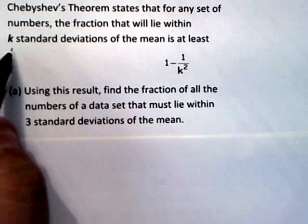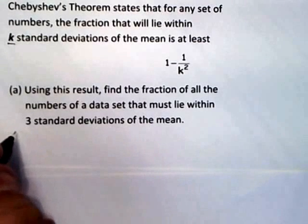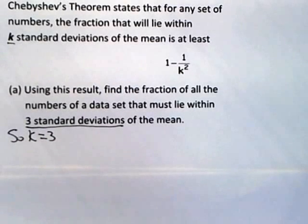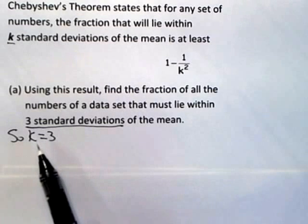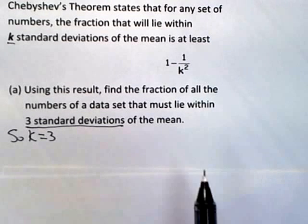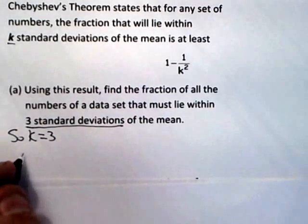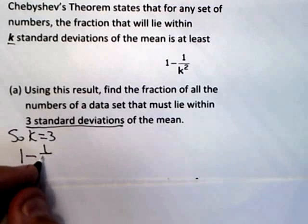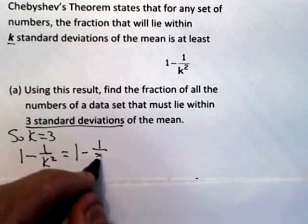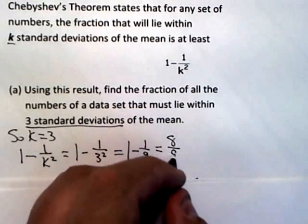In the statement of Chebyshev's theorem, k is the number of standard deviations from the mean. So if we want it to be within three standard deviations of the mean, k equals 3. We calculate 1 minus 1 over k squared: with k equal to 3, that gives 1 minus 1 over 9, which is 8 ninths.